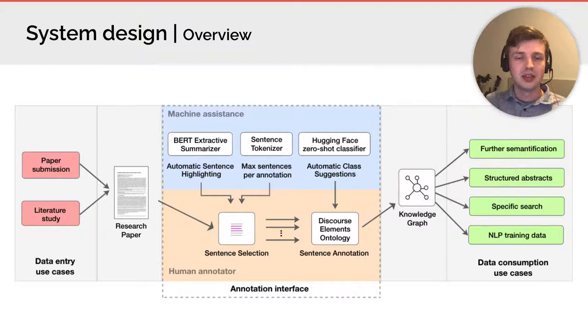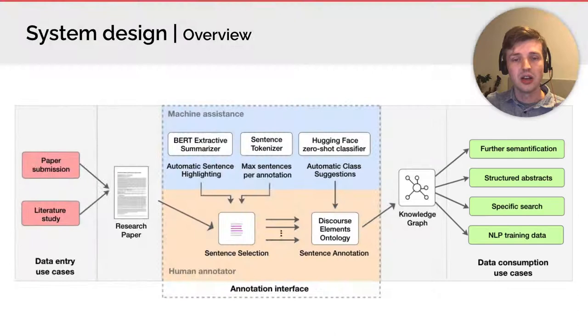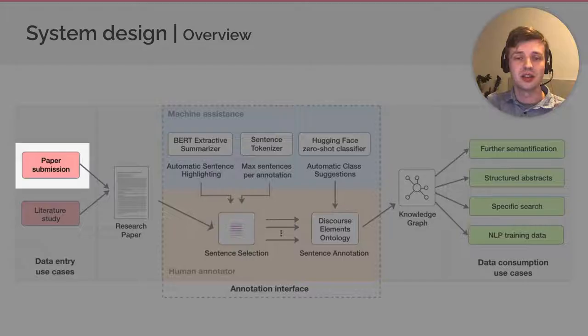Let's now discuss the system design. This is an overview of the system design. The interface is displayed in the middle and the use cases for generating structured data on the left and for using the structured data on the right. The workflow is as follows. A user or a researcher uploads a paper in PDF format to the system. Afterwards, the user annotates key sentences within the paper. Each sentence is annotated with a discourse class describing what the sentence is about. Based on the annotations, a knowledge graph is created. Let's now have a look at the individual components.